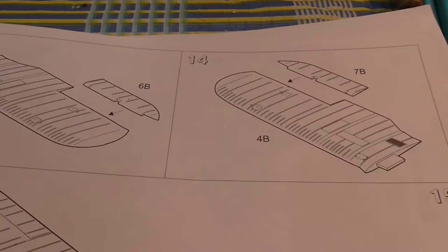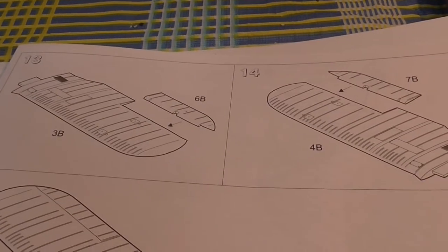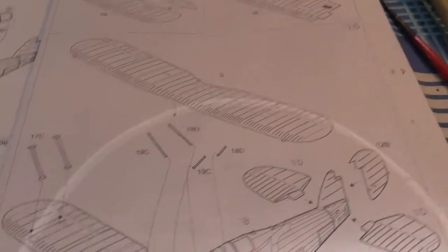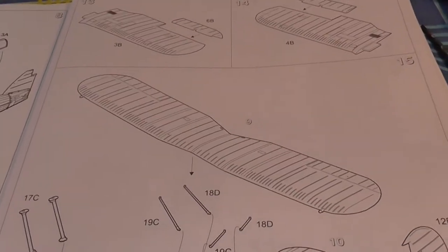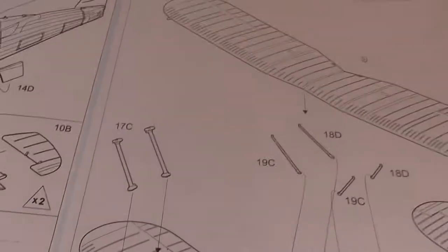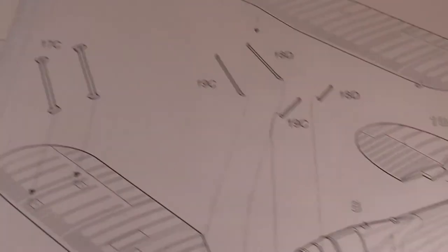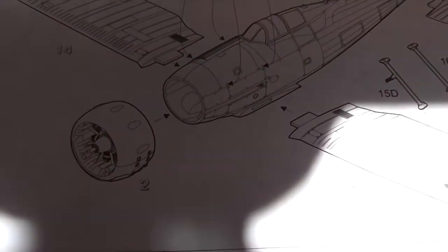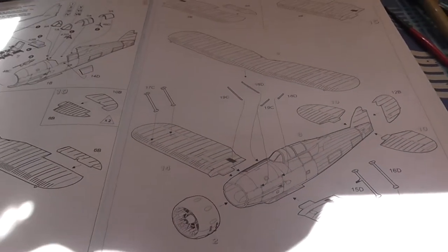Up here, top halves of the wings, nothing to them really. Down there, all the parts of the wings being put together, so top, bottom, the uprights, tailplane and rudder, along with the engine. Nothing much, quite easy really.